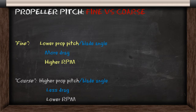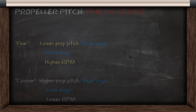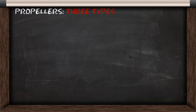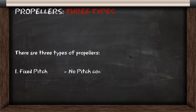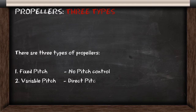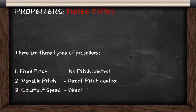So how do propellers utilise propeller pitch? There are three main types of propellers. There's fixed pitch, where you don't control the pitch at all. Then there's variable pitch, where you control the pitch directly. And then you have a constant speed propeller, where you're controlling RPM directly.